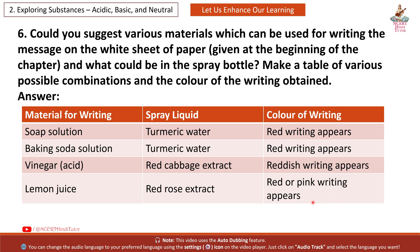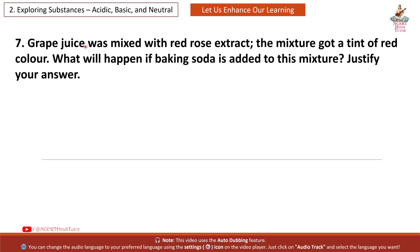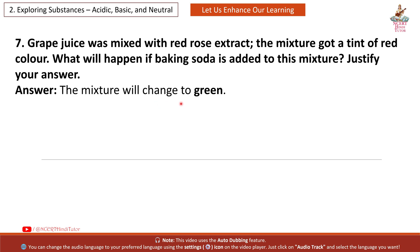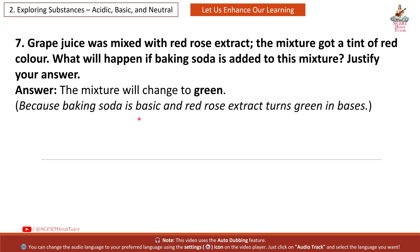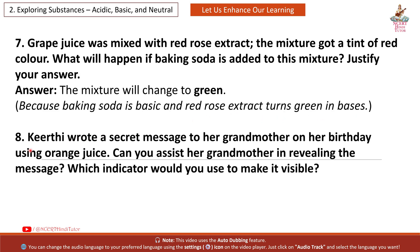Question 7: Grape juice was mixed with red rose extract and the mixture got a tint of red colour. What will happen if baking soda is added to this mixture? Justify your answer. Answer: The mixture will change to green, because baking soda is basic and red rose extract turns green in a base.